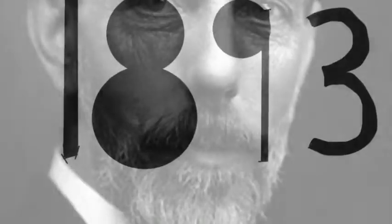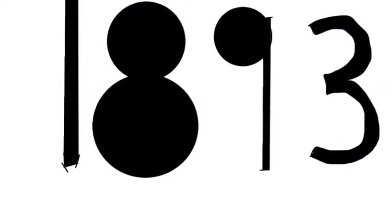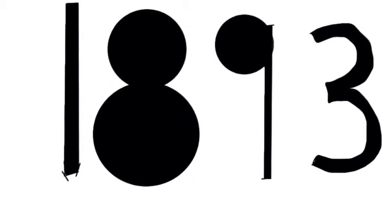Krypton was discovered by Sir William Ramsay in 1893 on the 30th of May. The Scottish chemist was studying liquefied air as he discovered it.